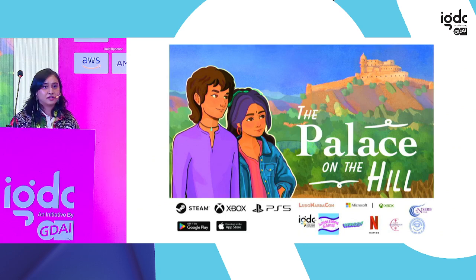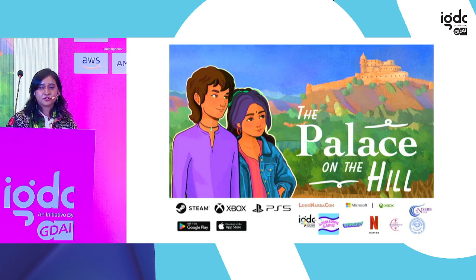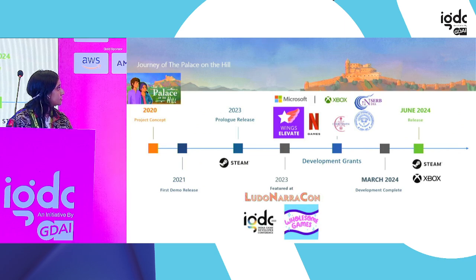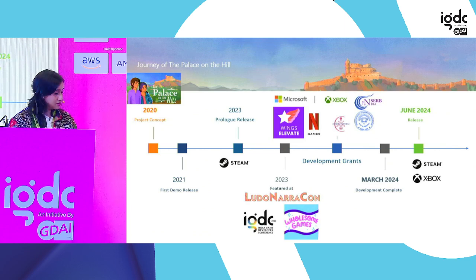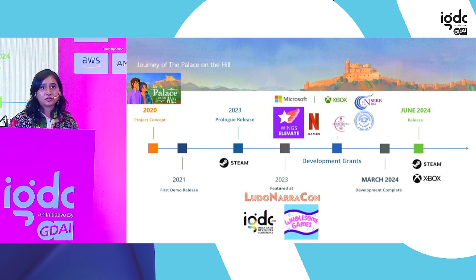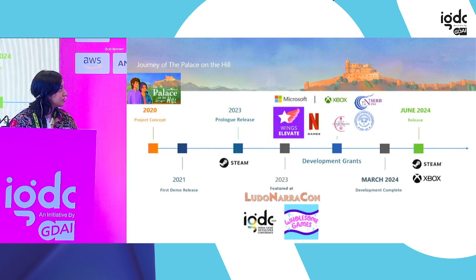This is the game that we launched earlier this year. It's called Palace on the Hill. It's about a teenager living in a small fictional village in the 90s, and his dream is to go to art school. We started the concept in 2020. We got really good response for the prologue on Steam and Google Play Store, got the IDFA Xbox app grant, were part of the Wing Elevate program, and also got a grant from the Indian government. That really helped us, and we launched in June this year.